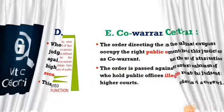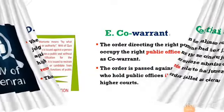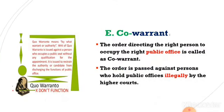The last remedy is quo-warranto. The main aim of this remedy is to ensure the right person occupies the right public office or government job. The High Court passes an order against a person who holds a public office illegally, for example by giving bribery. This is called quo-warranto, and its main aim is that the right person should occupy the right public office.